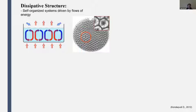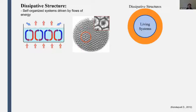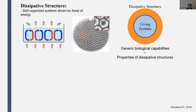A core hypothesis of our group is that living systems are themselves a type of dissipative structure. And we expect that because of this, some of the generic capabilities and properties of organisms will also be generic to non-living dissipative structures. And so we study those non-living dissipative structures to look for biological properties.